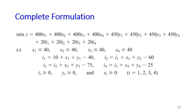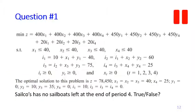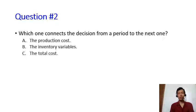To complete the formulation, we add sign restrictions: all variables must be greater than or equal to zero for quarters t = 1, 2, 3, 4. Now here's a comprehension question: suppose the optimal solution shows i4 = 0. Is it true or false that Silco has no sailboats left at the end of period four? Think about it.